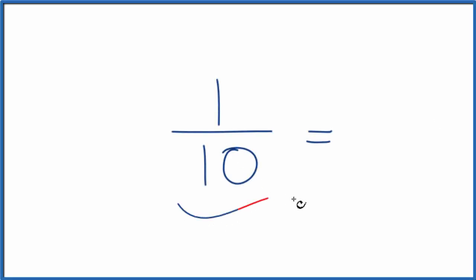If you're asked to write one-tenth, the fraction one-tenth as a decimal, here's how you do it. Basically, we're dividing one by ten to get this fraction, one over ten, in decimal form.